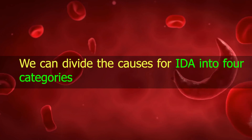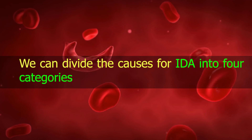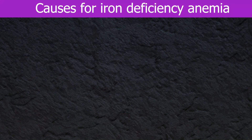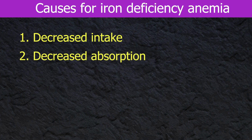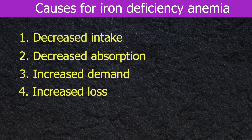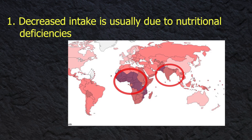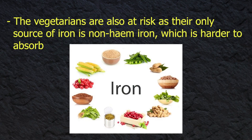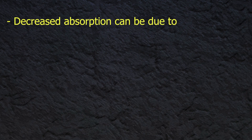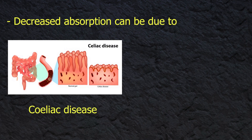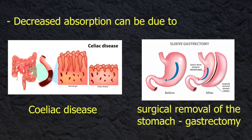The causes of iron deficiency anemia can be divided into four categories: decreased intake, decreased absorption, increased demand, and increased loss. Decreased intake is usually due to nutritional deficiencies, more commonly seen in poorer countries. Vegetarians are also at risk as their only source of iron is non-heme iron, which is harder to absorb. Decreased absorption can be due to diseases like celiac disease or surgical removal of the stomach, known as gastrectomy.